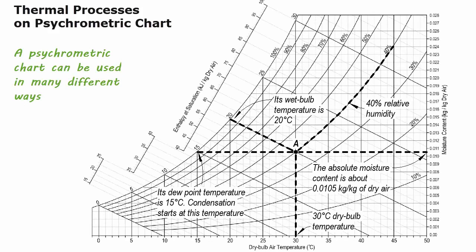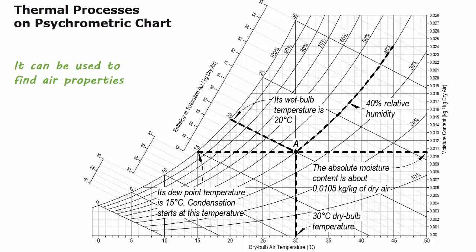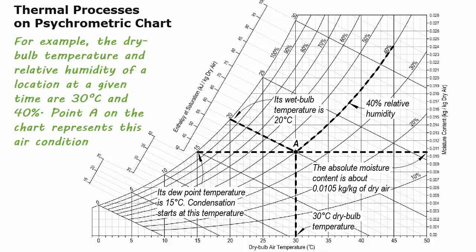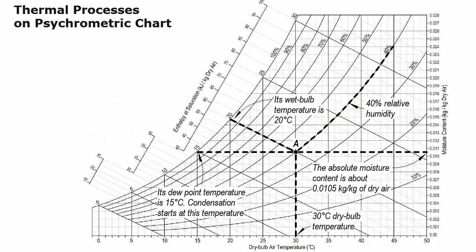A psychrometric chart can be used in many different ways, including to find air properties. For example, the dry bulb temperature and relative humidity of a location at a given time are 30 degrees C and 40%. Point A on the chart represents this air condition, and from this point all other air properties can be found.